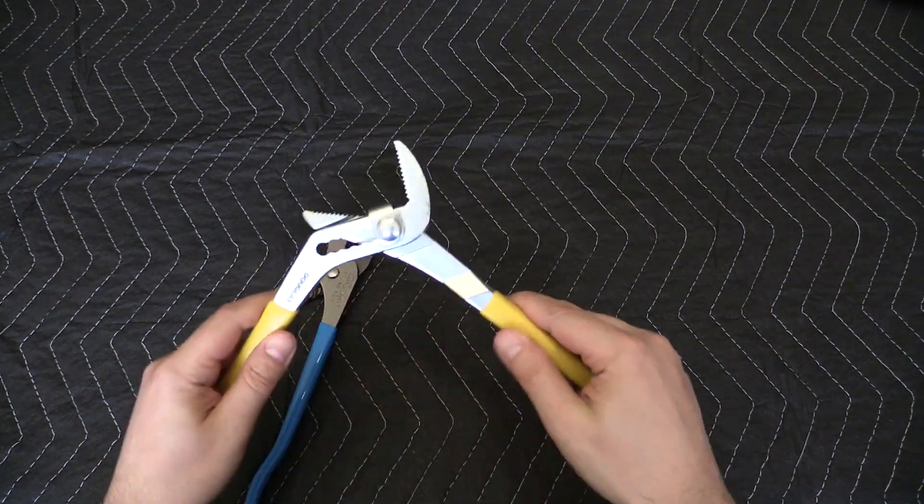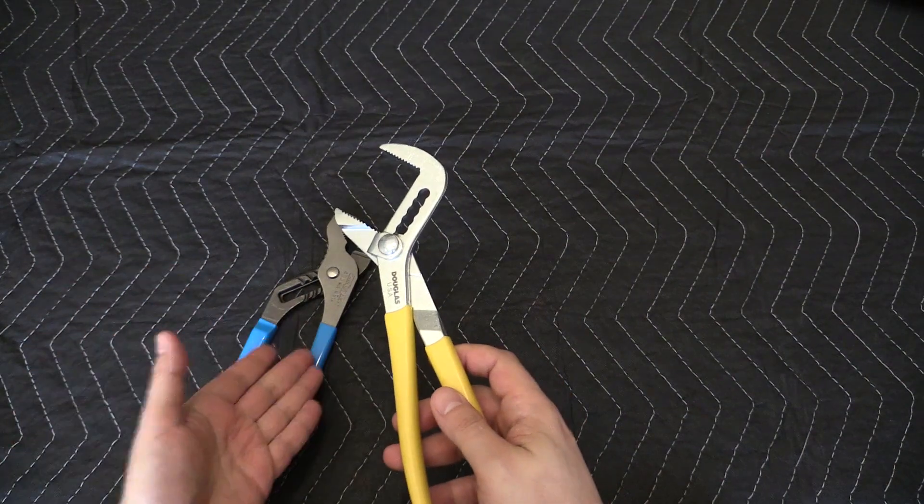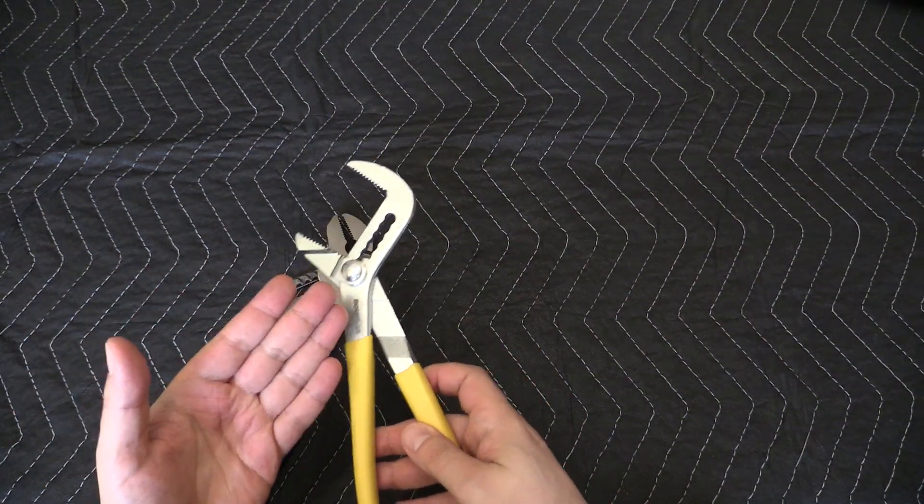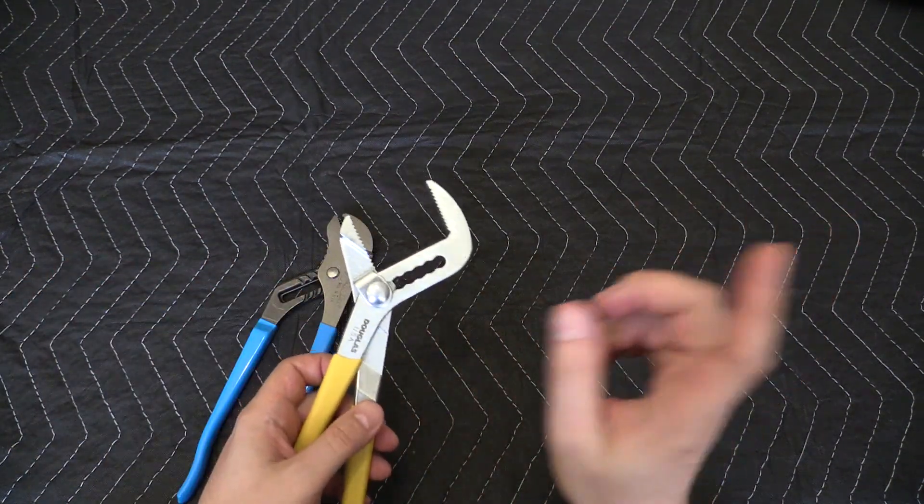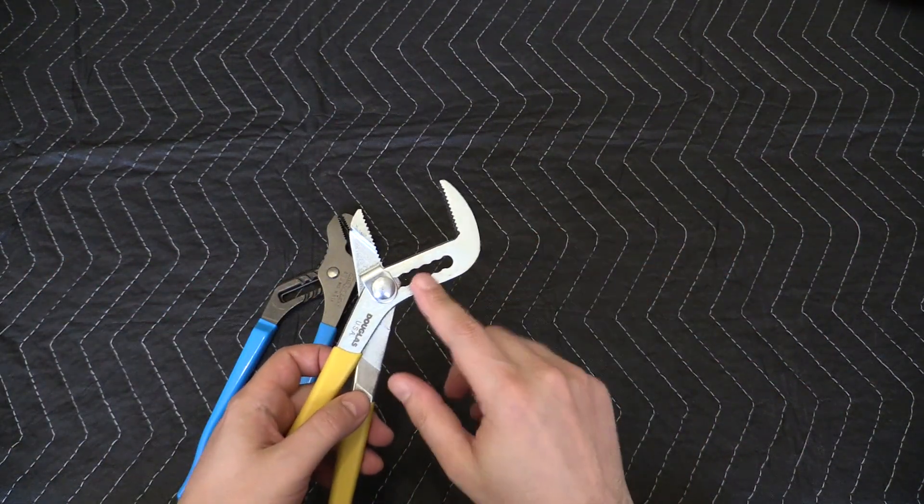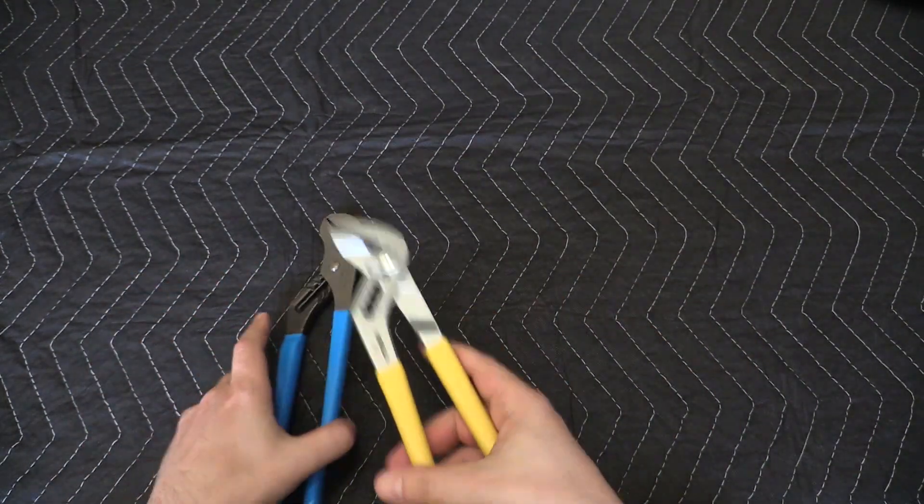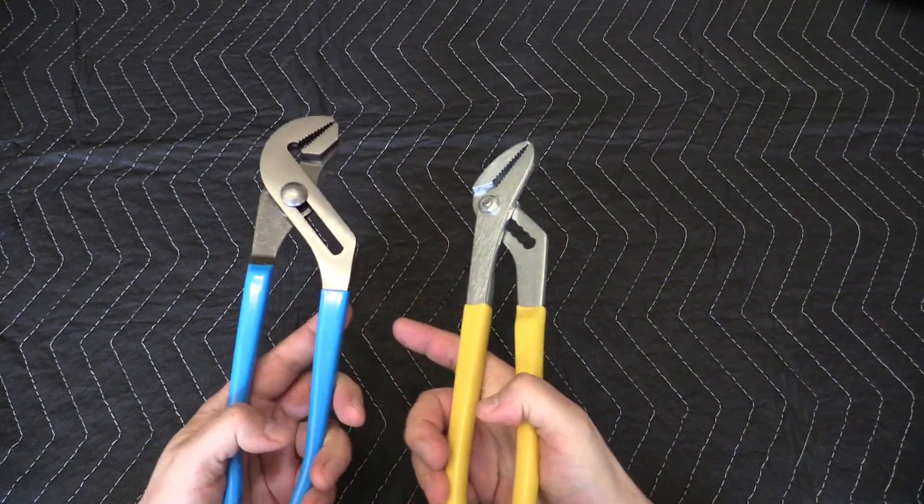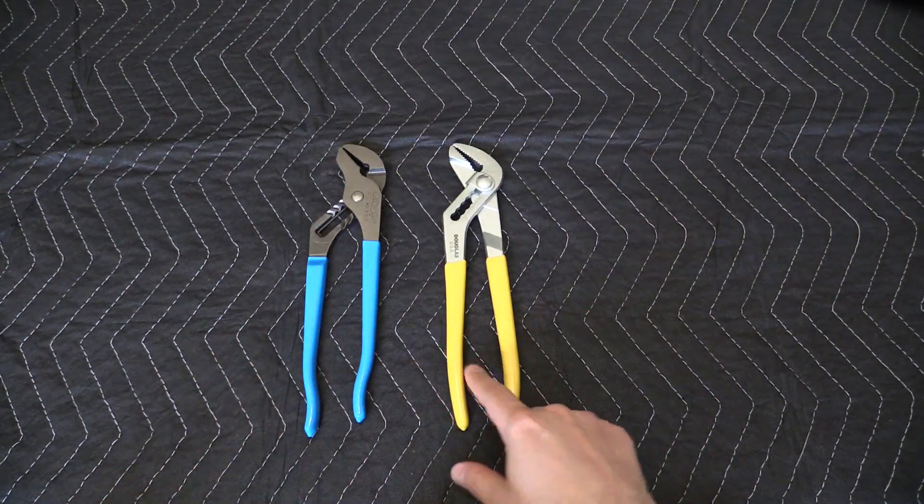With the Douglas, even for the same price I'd rather have the channel locks, but the Douglas is actually more expensive. These are between 20 to 25 bucks and these are around 30 to 35 typically, so considering that these are even more expensive, that makes it even harder to recommend these Douglas pliers.